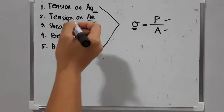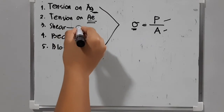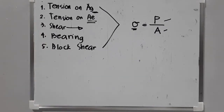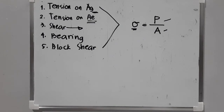For shear, the shearing happens on the bolts — shear force over the area of shear. For bearing, that is the bearing force given over the area of bearing. For block shear, it is the combination of shearing and tearing.